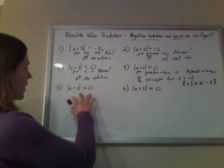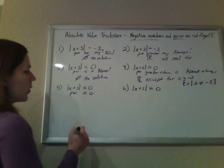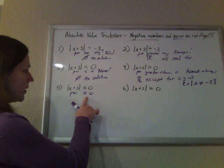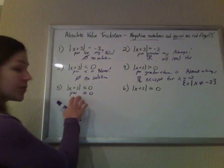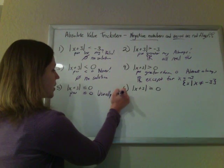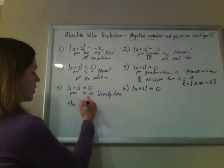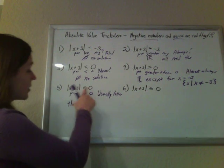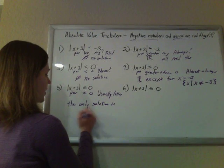Next case: the absolute value of x plus three less than or equal to zero. This is a positive number being less than or equal to zero. Positive numbers are usually not less than zero, so this is usually false. But there's one case where this will work — the only case is when it equals zero. When x is negative three, negative three plus three will be zero, and zero is less than or equal to zero. So the only solution is x equals negative three.